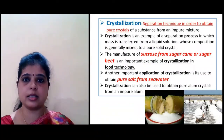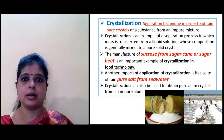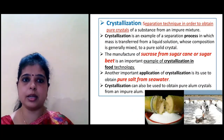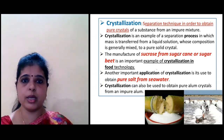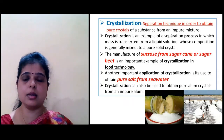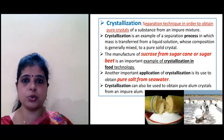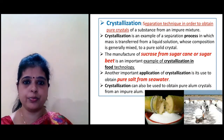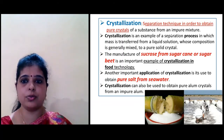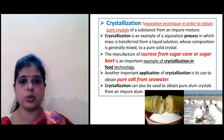Next is crystallization. Crystallization is a separation technique to obtain a pure crystal from an impure mixture. The best example is the manufacture of sucrose from sugarcane or sugar beet. Another application is obtaining pure salt from sea water.